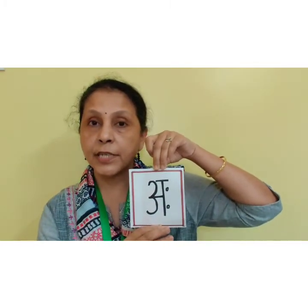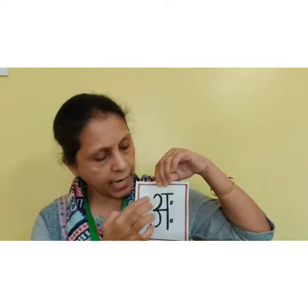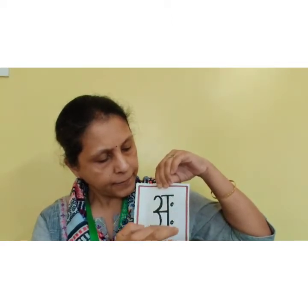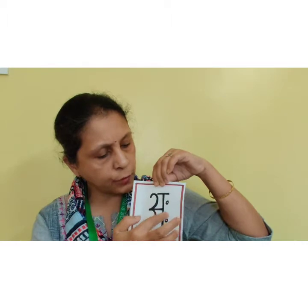Today we are going to learn a new svar — that is AHA. Which svar is this, children? AHA. AHA has no words, so no pictures. AHA has no words, no pictures. And it is very easy. You can see it just looks like A. You have to write A, and then the only thing is that you are going to give two dots beside this standing line. Okay children, so this is the svar AHA.